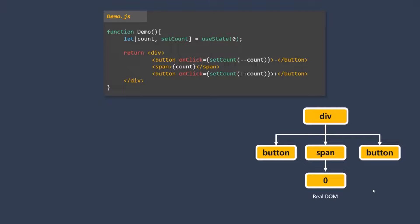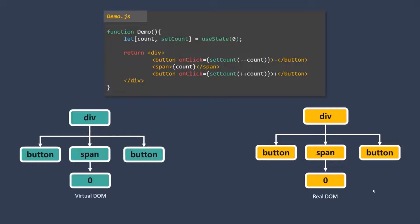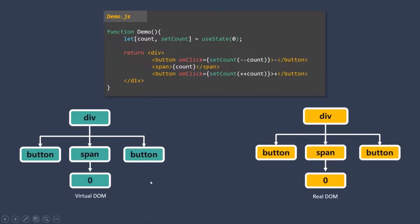So what React does is, instead of directly communicating with the real DOM, it creates a virtual DOM in the memory. When the application renders for the first time, a virtual DOM tree structure is created in memory, and the same DOM tree is rendered in the real DOM. Now let's say something changes — the user clicked the plus button and the state changed, incrementing the count to 1. When the state inside a component has changed, the component function will be re-evaluated and the virtual DOM will be re-rendered with the updated value.